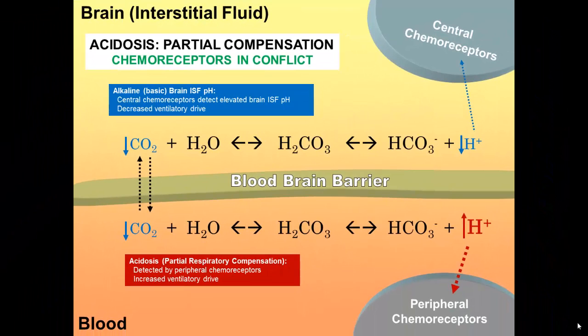So right now, we're in a situation where the chemoreceptors will be sending conflicting messages to the respiratory centers. The peripheral chemoreceptors, if it was solely up to them, would like to increase ventilation to continue to bring the pH back to the normal level. As it is, their ability to compensate for that pH challenge is limited by the central chemoreceptors' desire to normalize the brain ISF.